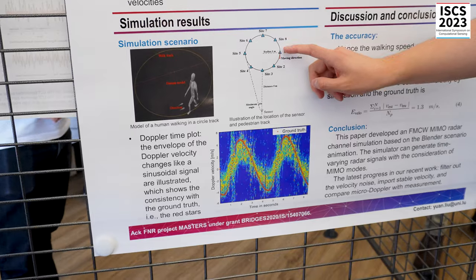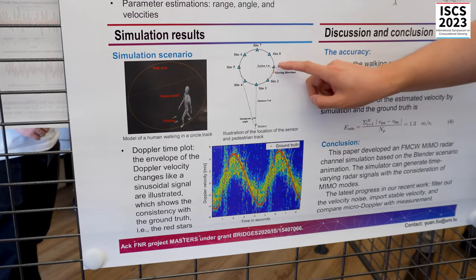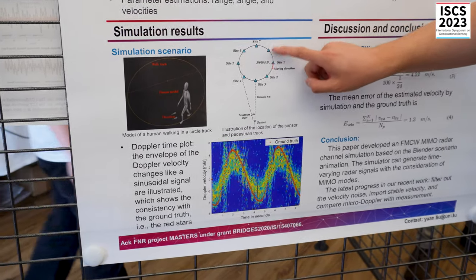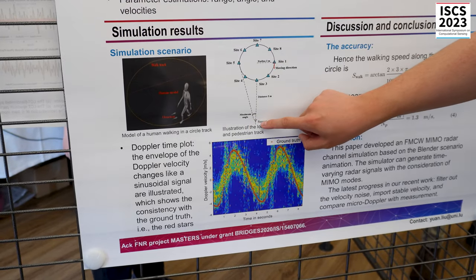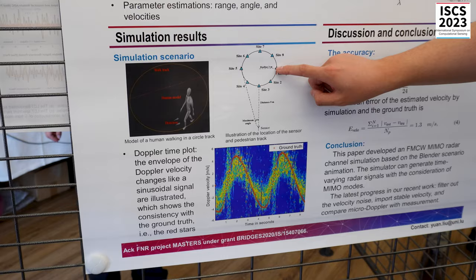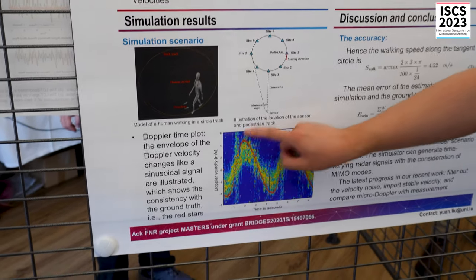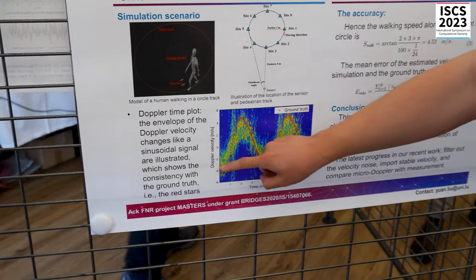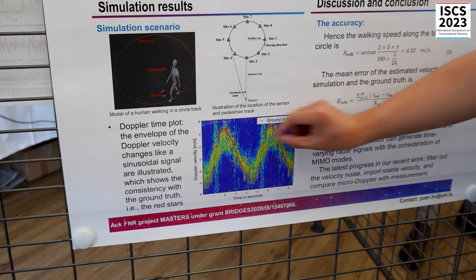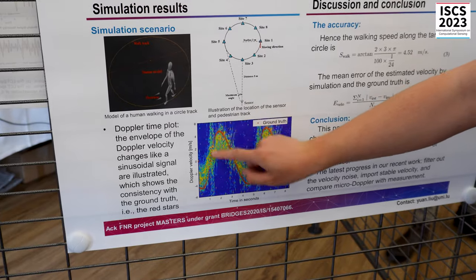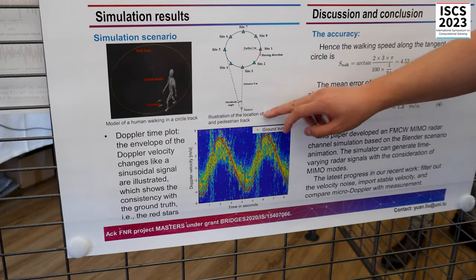Here is a human walking in circular from site 1 to via site 8 to site 1. Here is the location of the camera, so that we can see that this human is walking, the velocity changes in this curve. According to this ground truth, we also see some dispersed micro Doppler, because in our scenarios...